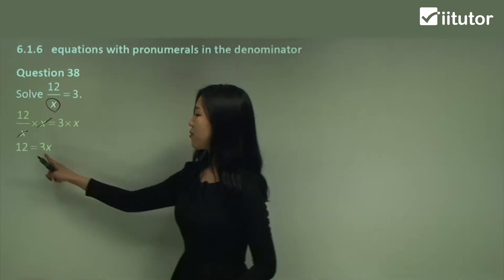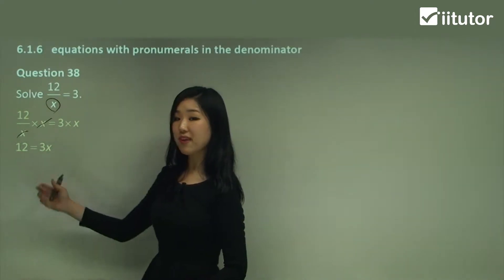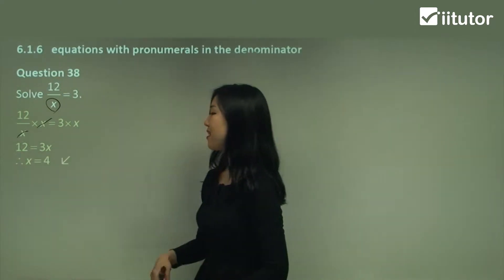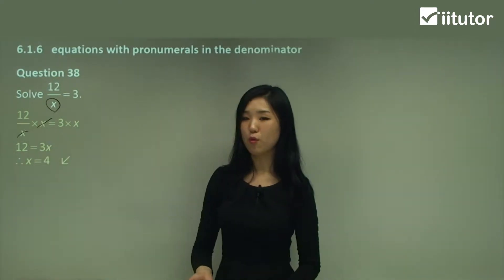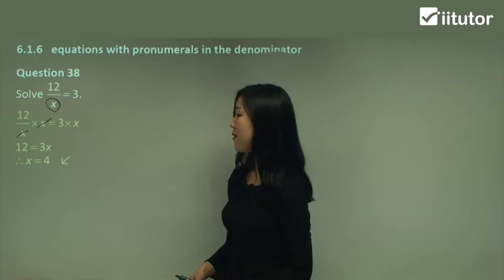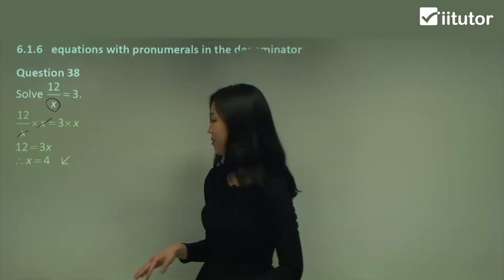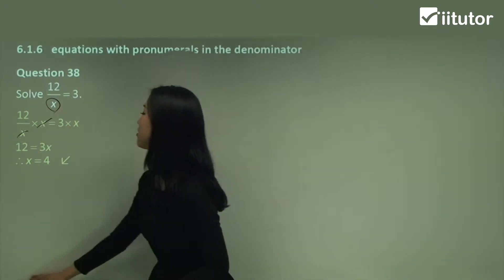So 3 times x is 12. What's x? x is just 4, because 12 divided by 3 is 4. And that's it — that's all we need to do. So it's the same kind of procedure.